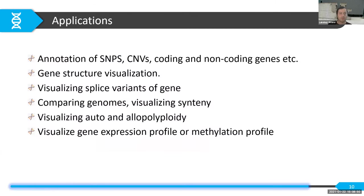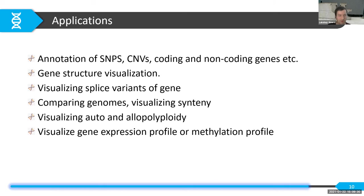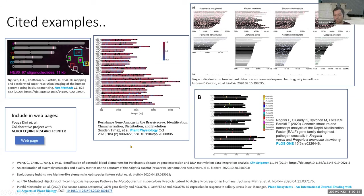Applications of ChromaMap include annotating SNPs, copy number variants, coding and non-coding genes, visualizing gene structure, comparative genomics like synteny, phased genomes, homologous chromosomes, and comparing gene expression or methylation profiles side by side. We have a preprint publication from 2020. People have already used and cited ChromaMap. The earlier version only had heat map and discrete color map; all the new features I discussed are in the 2021 version.